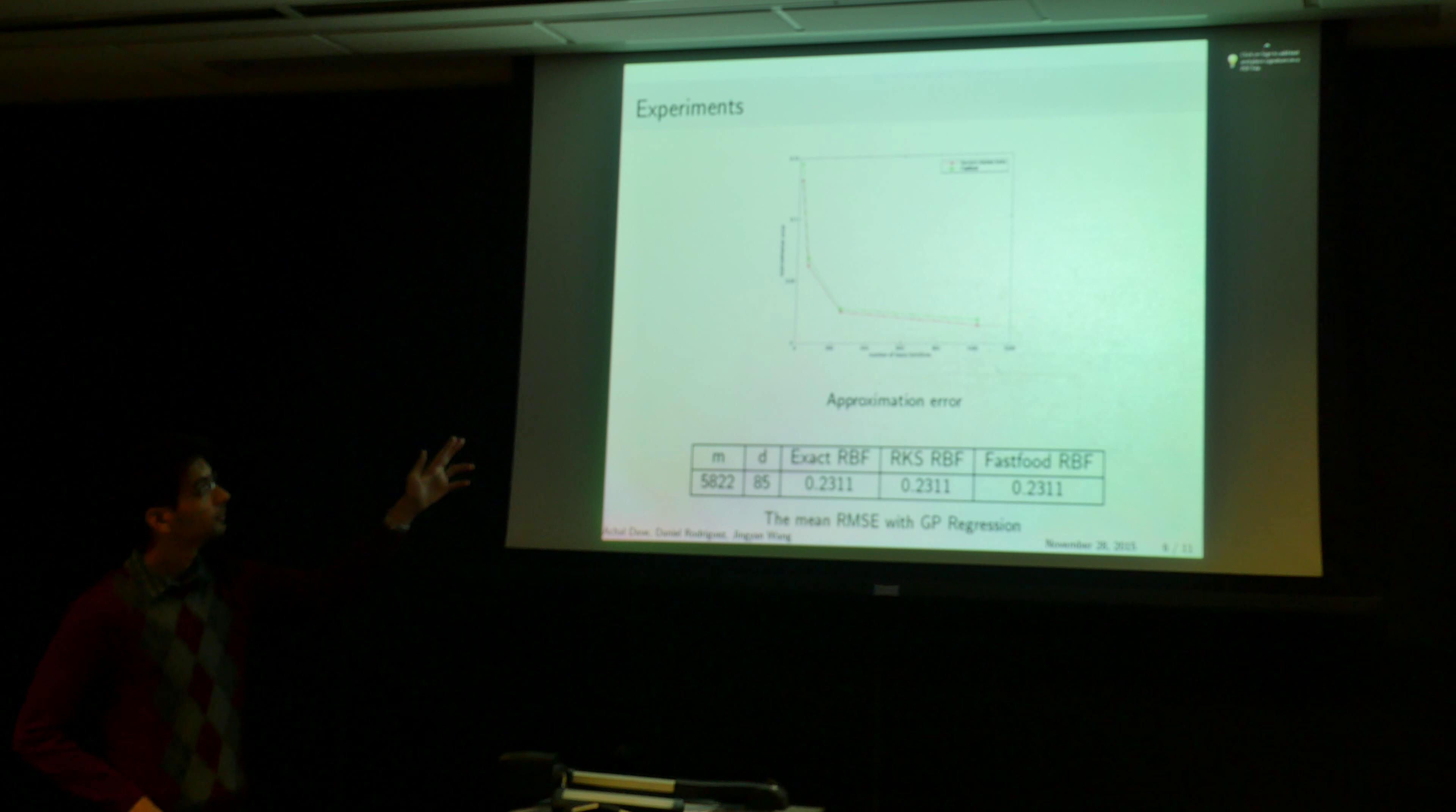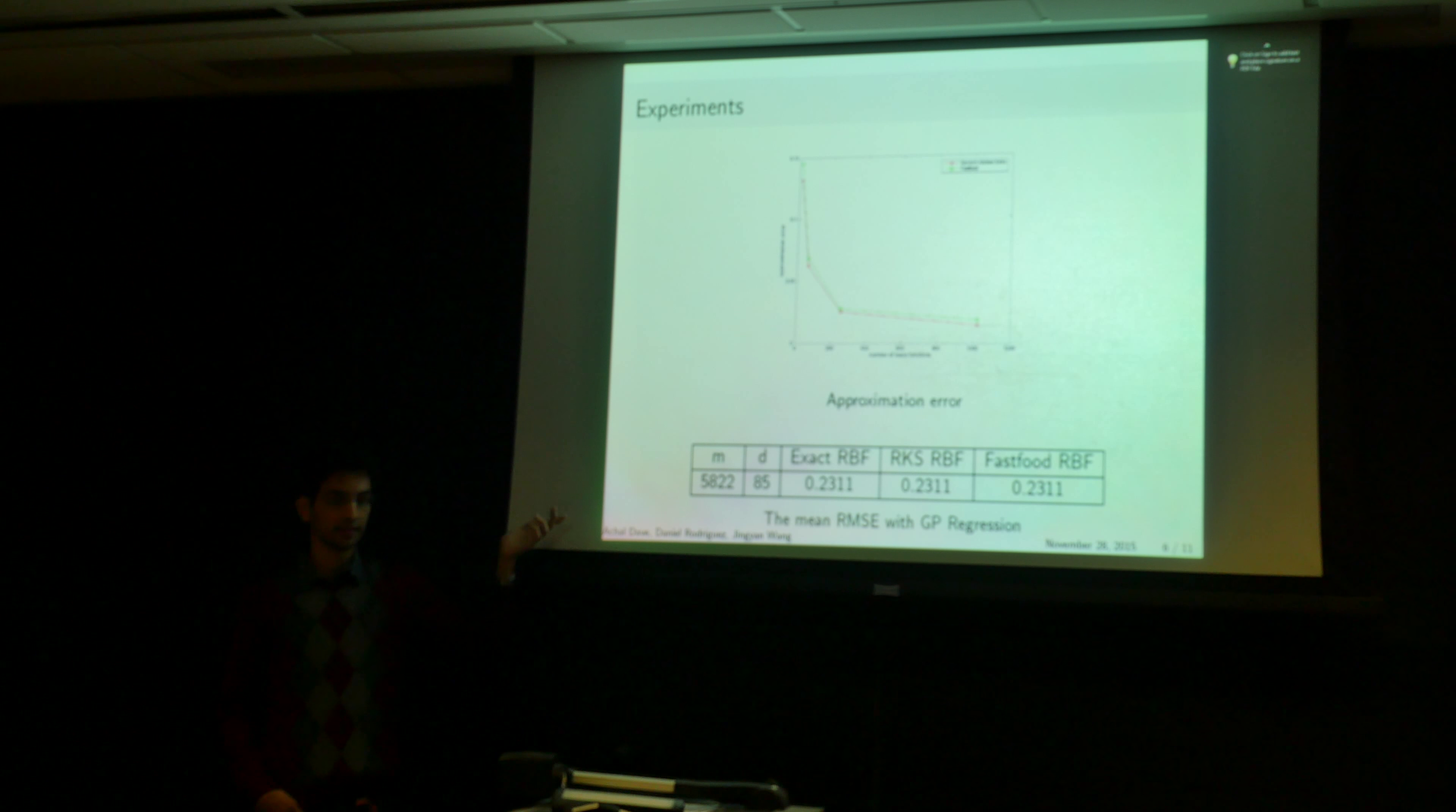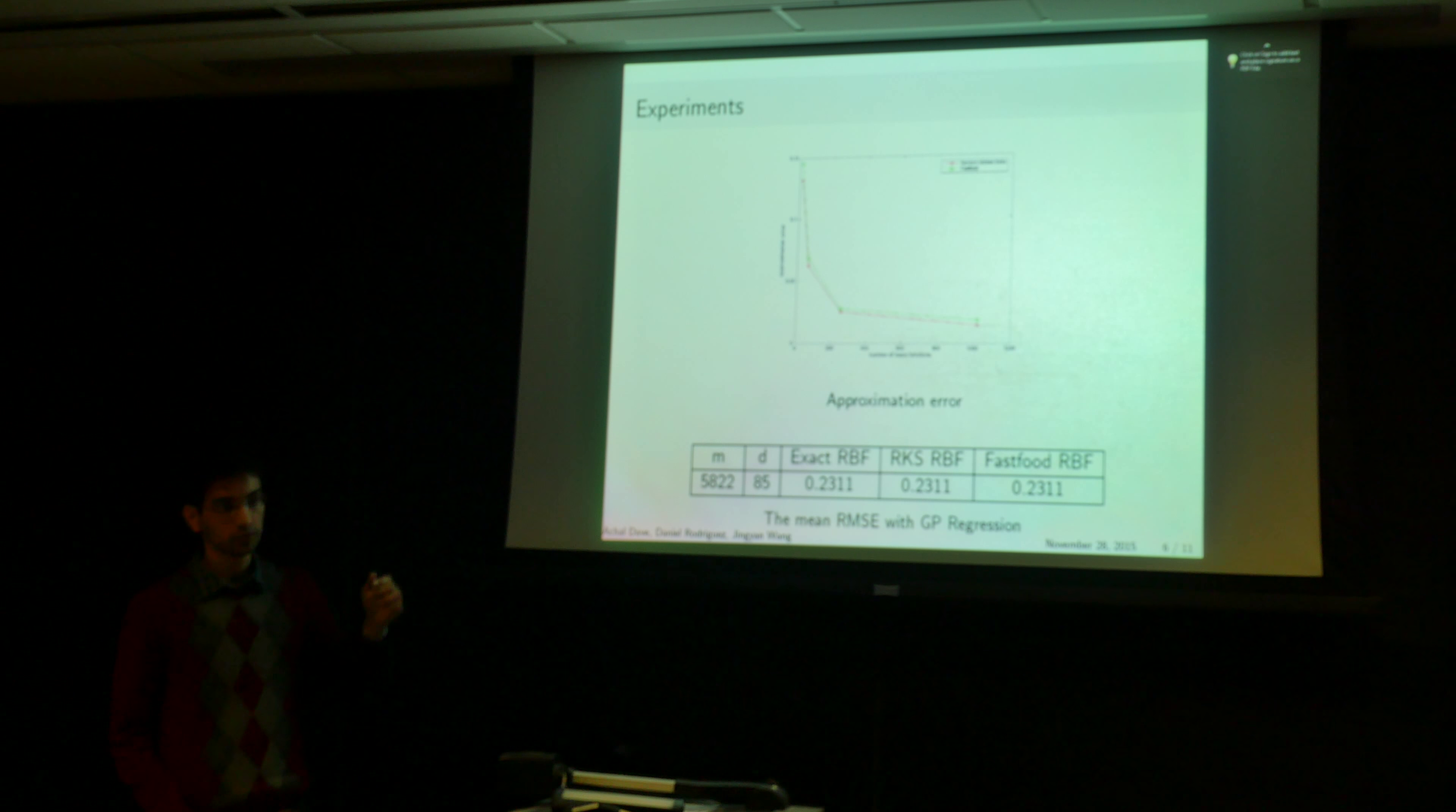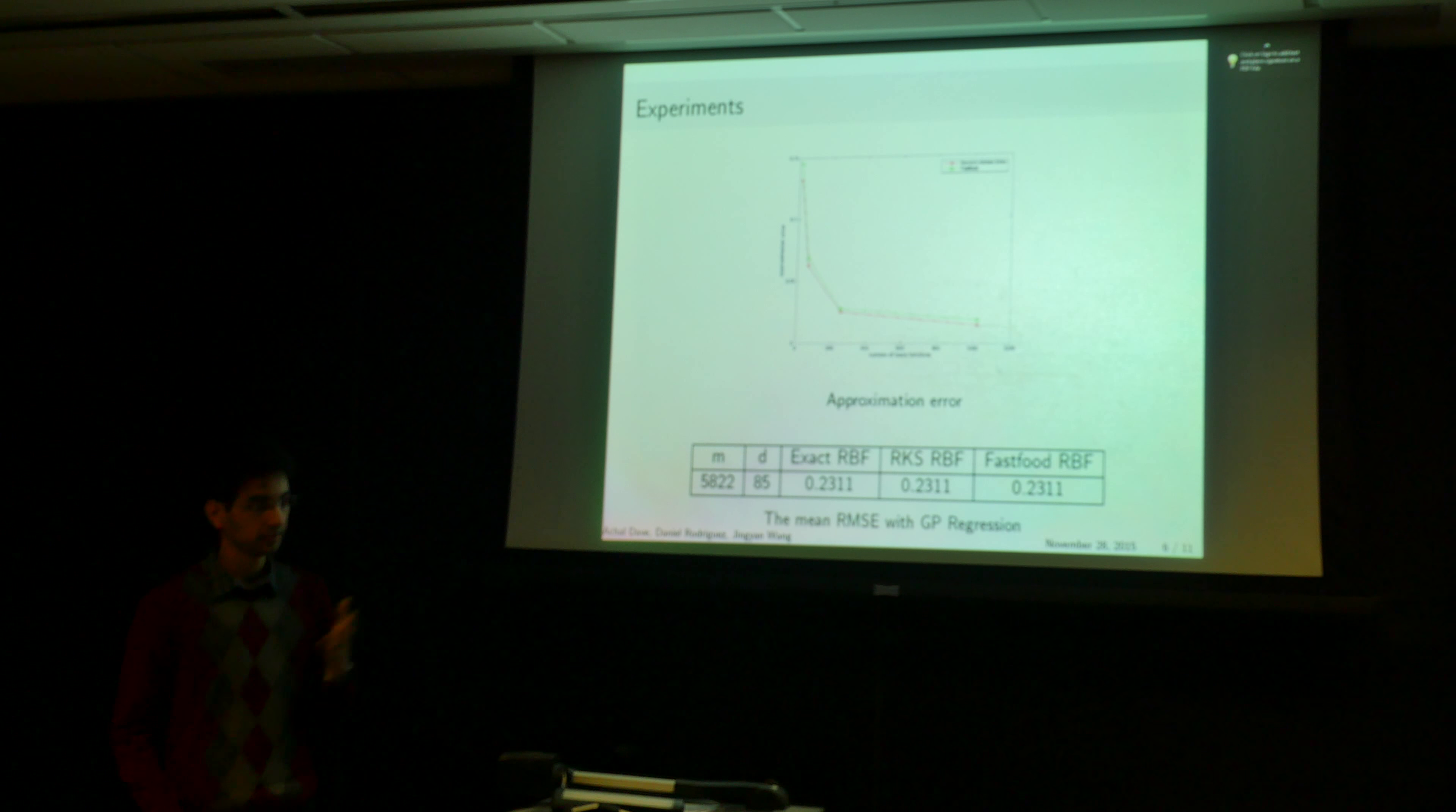And further, the approximation error between fast food and random kitchen sinks is actually pretty close. The second test that we do is looking at the actual accuracy of your classifier. And we find that you can get pretty close to the root mean square error using the exact kernel with using RKS or using fast food.